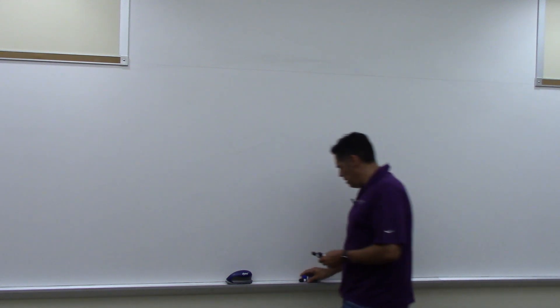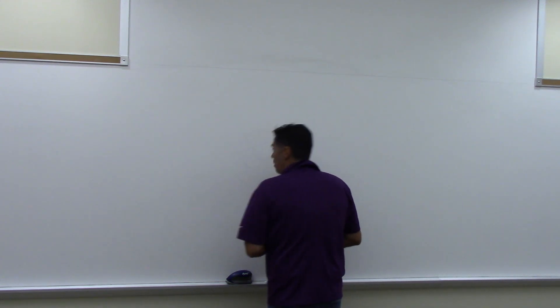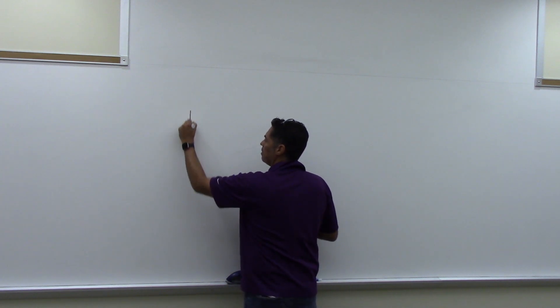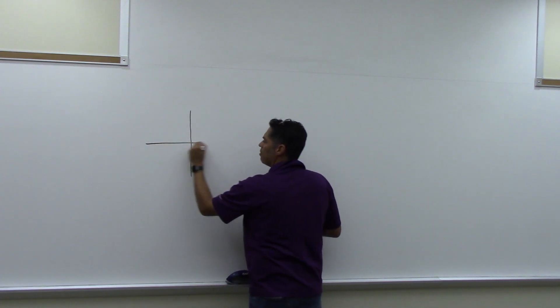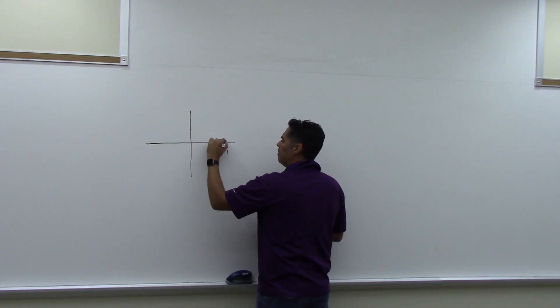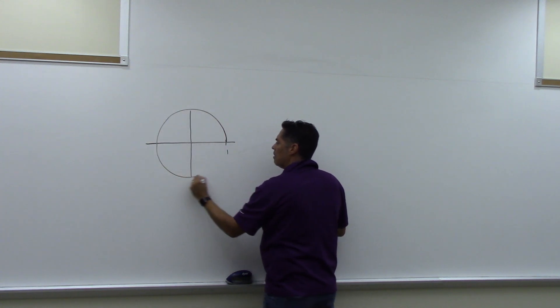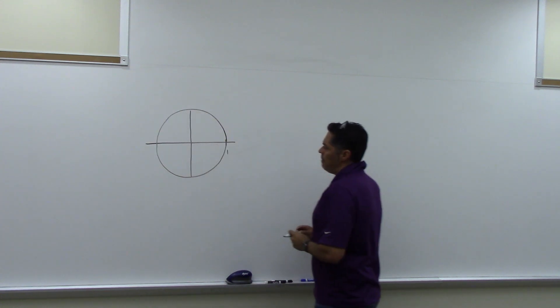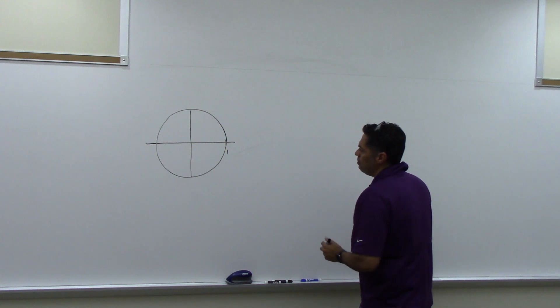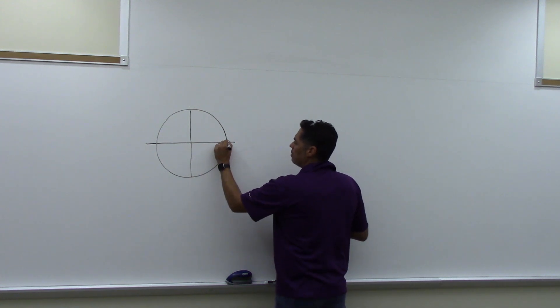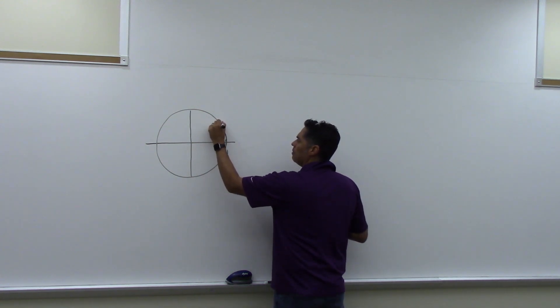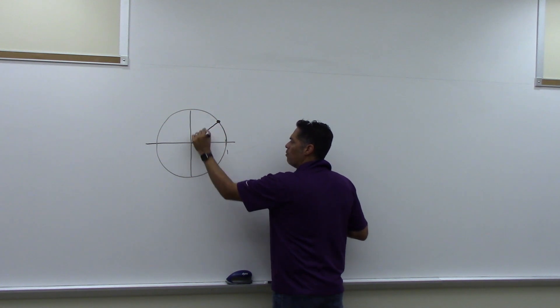So, unit circle. The unit circle, of course, is just a circle of radius one that we draw. From that circle, if you go to any point on that circle, the distance from the center to that point would always be one.